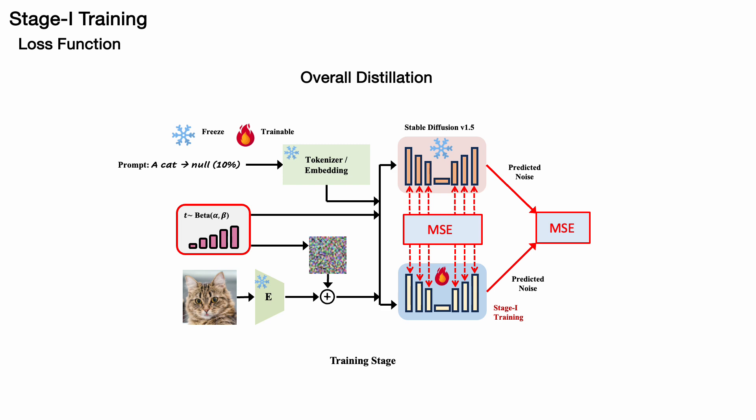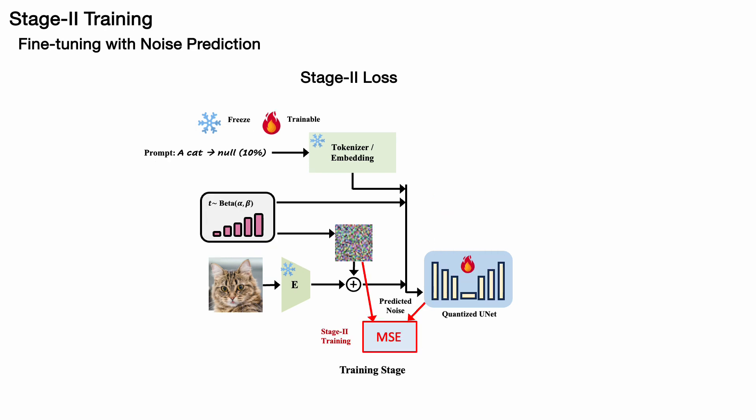This outlines our overall pipeline for stage 1 distillation training. To further enhance performance, we employ the vanilla diffusion model loss, enabling the quantized model to learn the ground truth noise. These are all the methods we've implemented to boost the performance of the 1.99 bits quantized diffusion model.